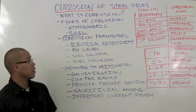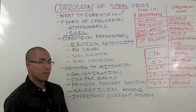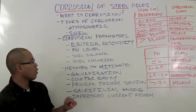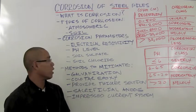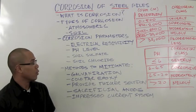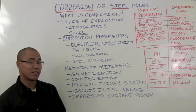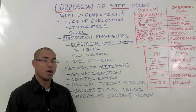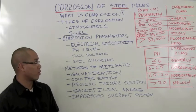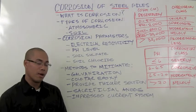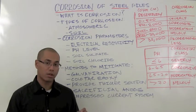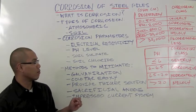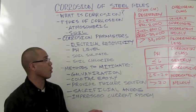If piles are driven into near neutral soils, the major factor that controls corrosion rate is the soil electrical resistivity, which is defined as the soil's resistance to electrical current across a cubic meter of earth. This is typically driven by soil chemical properties and also the amount of moisture within the soil.